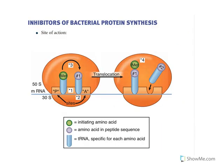Let us get into the topic. Before getting into protein synthesis inhibitors, we need to understand how protein synthesis occurs in bacteria. The various components include ribosomal RNA, which is made up of 50S and 30S subunits in bacteria. In case of human beings it is made up of 60S and 40S subunits.